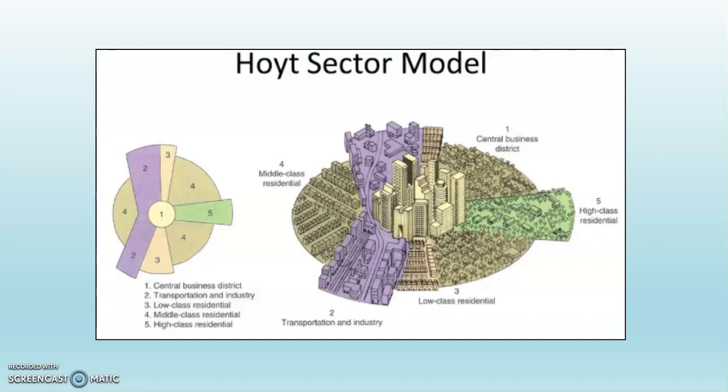So, for example, a wealthy neighborhood that was originally next to the CBD would grow outwards from the CBD. This is in contrast to the concentric zone model, which assumes people would move farther and farther from the CBD as time progressed in order to avoid the supposed problems of the inner city.